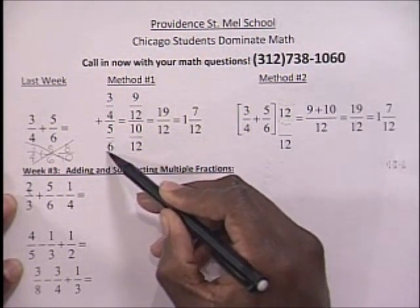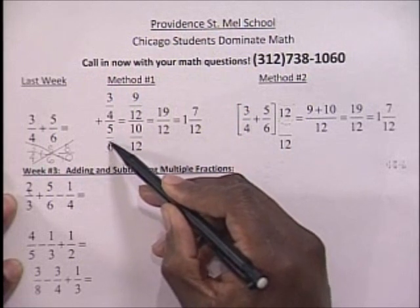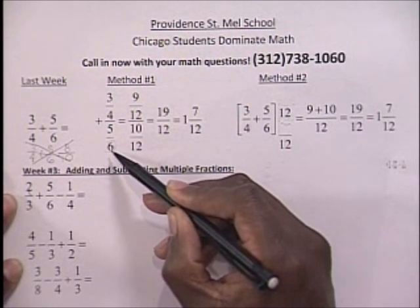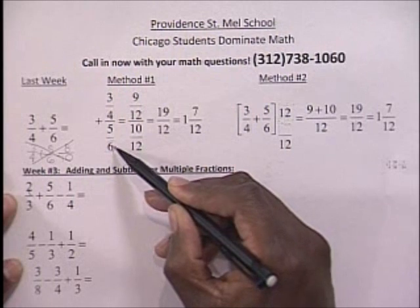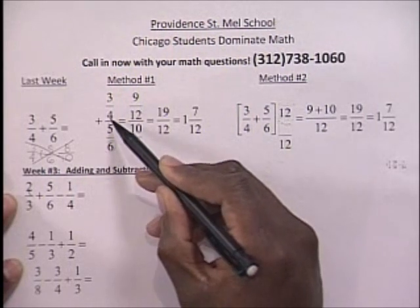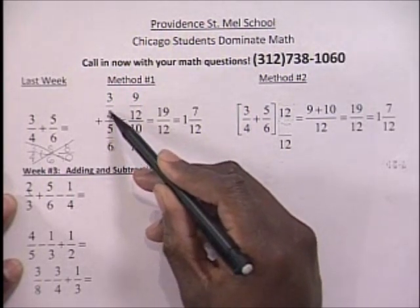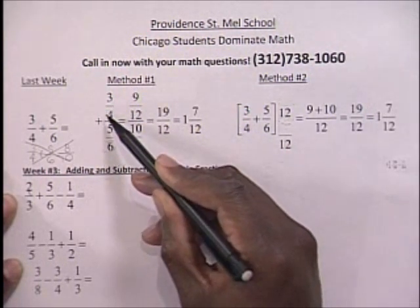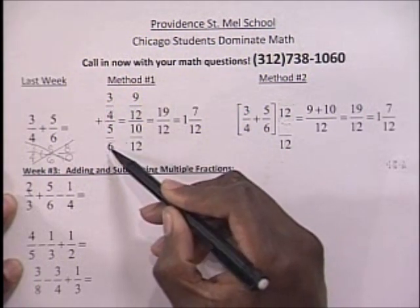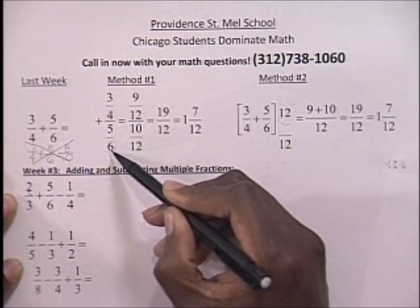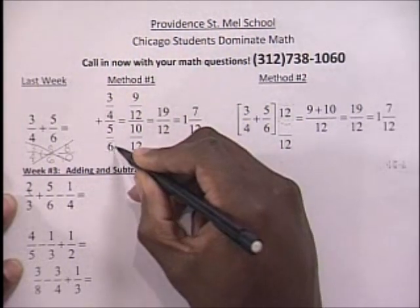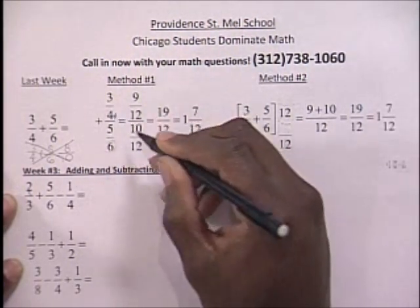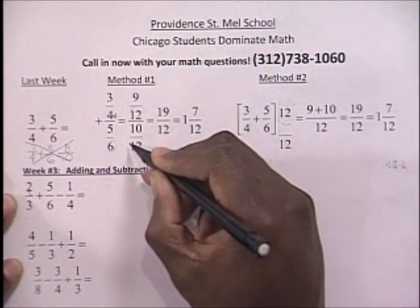So what we did was we incremented the 6 — in other words, you count by 6's — and went from 6 to 12. You ask yourself: can 4 go into 12 evenly? Can you multiply a number by 4 to get 12? And you can — you can multiply 4 by 3 to get 12. So therefore your common denominator is 12.